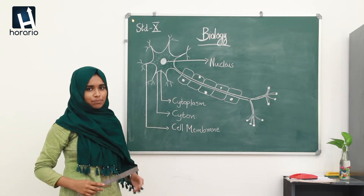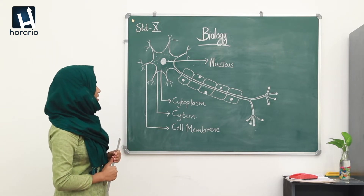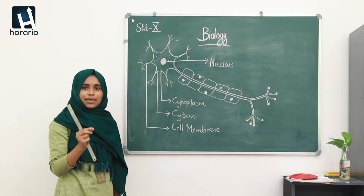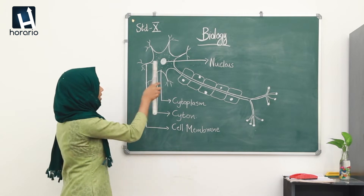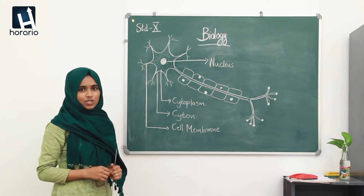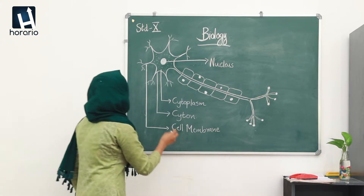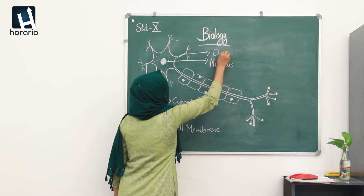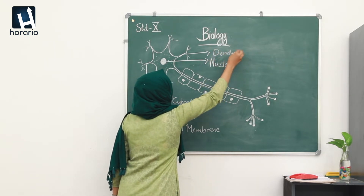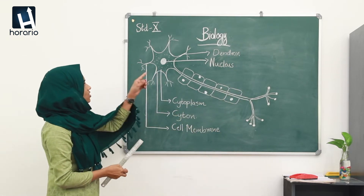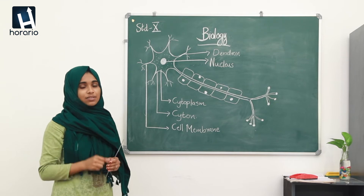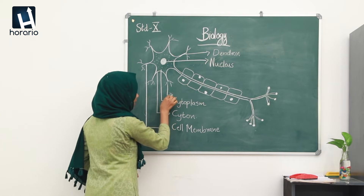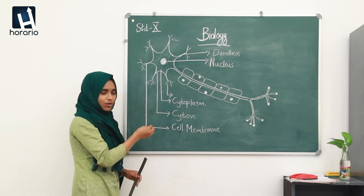From the cytone there is a small filament — a branch from the cytone. That branched structure from the cytone is known as the dendron. The dendron then re-branches into smaller branches, and those are called dendrites. The small branches re-branching from the dendron are known as dendrites.